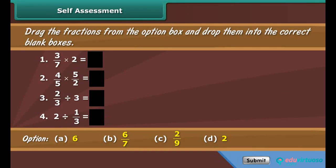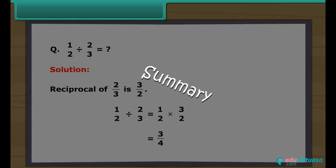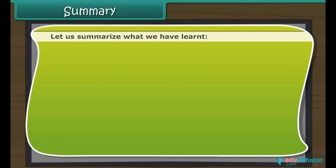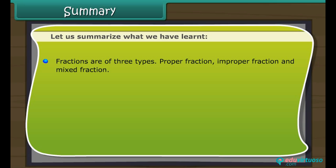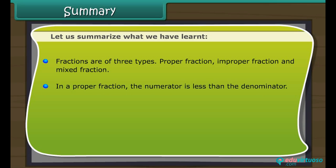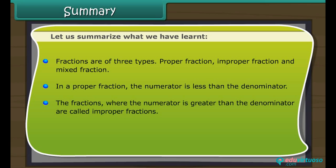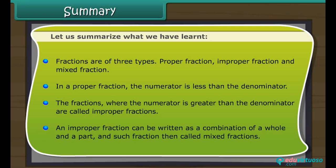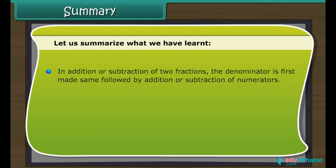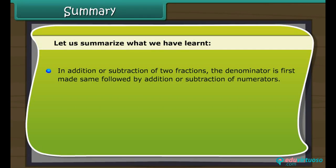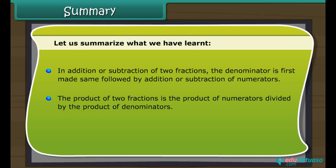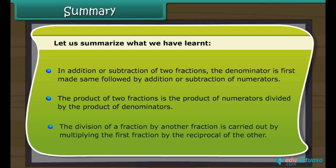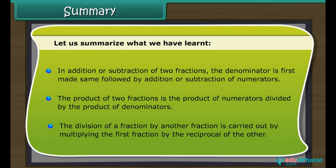Summary: Fractions are of three types — proper, improper, and mixed. In a proper fraction, the numerator is less than the denominator; in an improper fraction, the numerator is greater. An improper fraction can be written as a combination of a whole and a part, called a mixed fraction. In addition or subtraction, denominators are first made the same, then numerators are operated on. The product of two fractions is the product of numerators over the product of denominators. Division by a fraction is done by multiplying by its reciprocal.